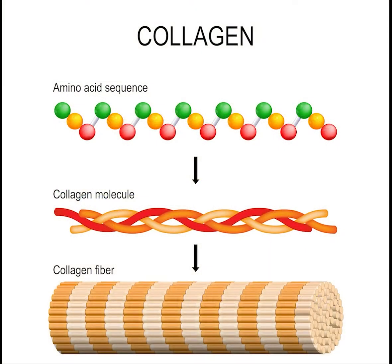These peptides begin intertwining and become the building blocks of proteins in our skin and every other organ in the body. They are the catalysts for protein production, which is the most plentiful compound in the body other than water, and make up skin proteins like collagen and elastin.